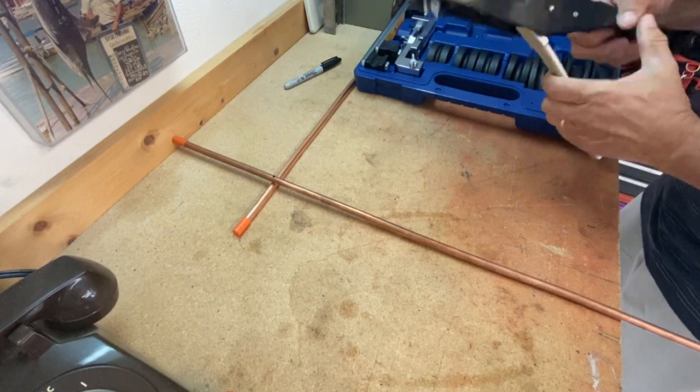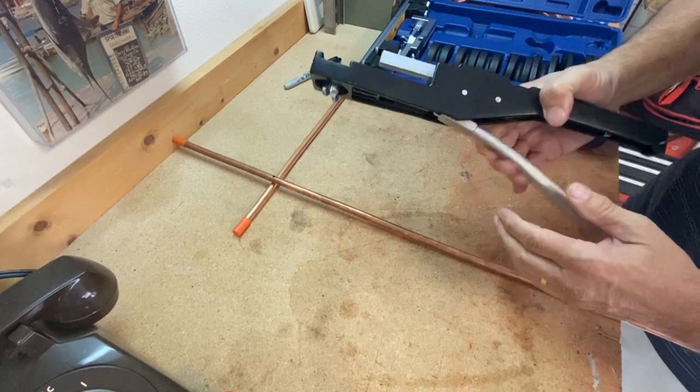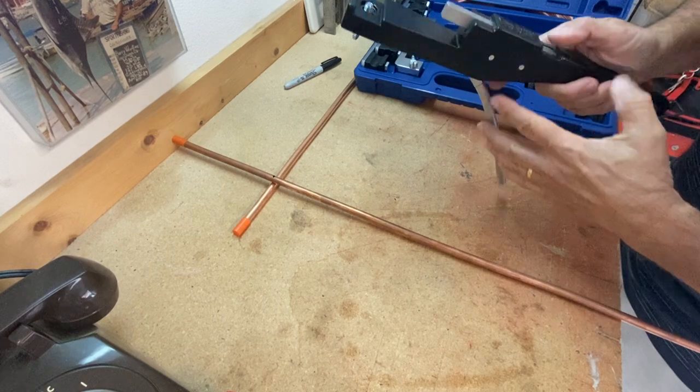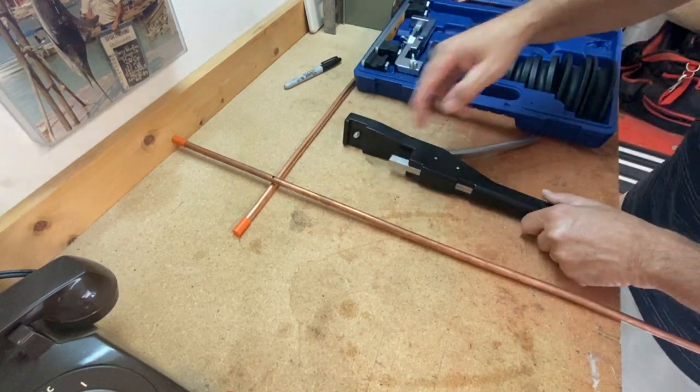Now you want to get the tools out. This is the ratchet bender. This just moves up as you ratchet it. If you push it down, it will allow it to free fall back in. Gives you back a full space again on this.